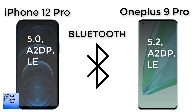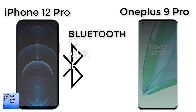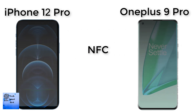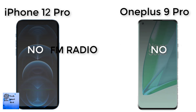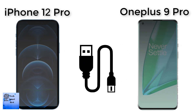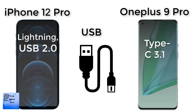The Bluetooth of the OnePlus 9 Pro is Bluetooth 5.0 with A2DP. The USB of the OnePlus 9 Pro is USB Type-C 3.1. The USB of the Apple iPhone 12 Pro is Lightning USB 2.0.